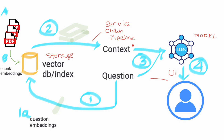We will have a separate video for chaining prompts. Looking at the red pieces one more time: a UI component to ask questions and get responses, a storage layer, a service/chain/pipeline layer — used interchangeably — and most importantly the model layer itself. These four pieces form your architecture.